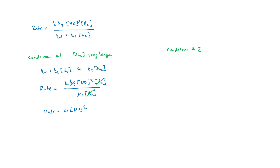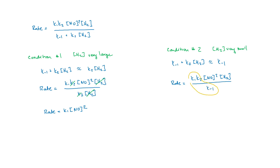Condition two: the concentration of hydrogen is very small. Now the K2[H2] term becomes negligible, and the denominator is dominated by just K₋₁. This simplifies our rate law, and lumping all K terms into a general K, we see the reaction is second order with respect to nitrogen monoxide and first order with respect to hydrogen. Under these conditions, we can confirm whether the proposed mechanism is correct. Either condition can be used to test the proposed mechanism.